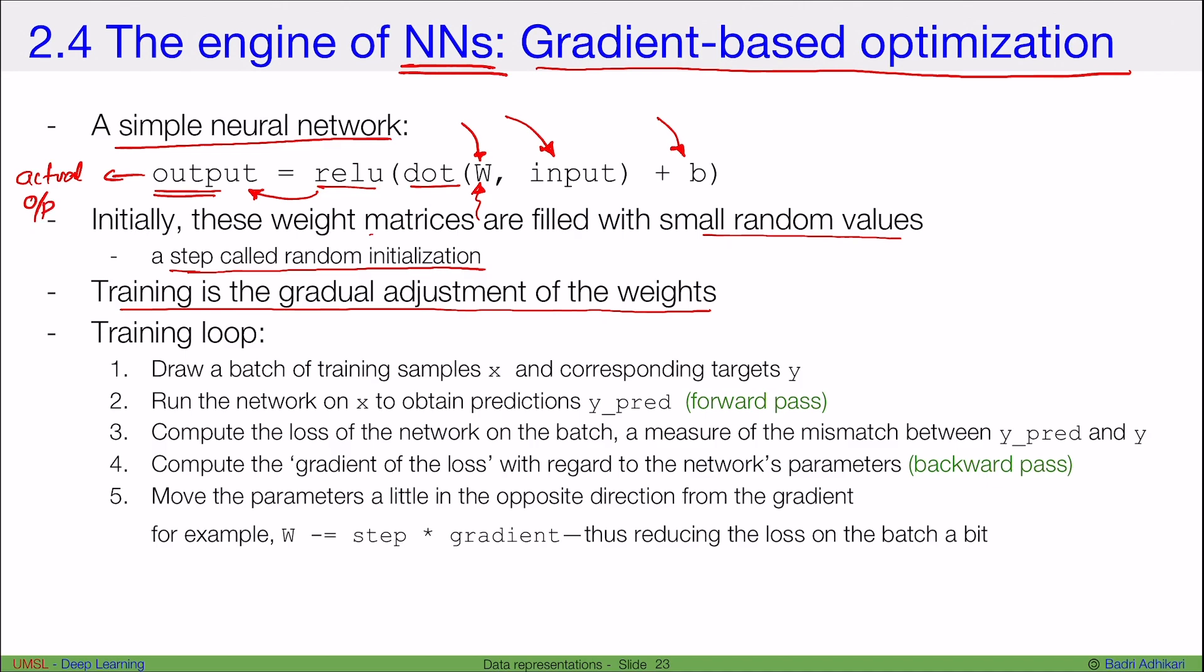So our training loop, now this is the most important part here, the training loop, what we mean by training in neural network, consists of the following.